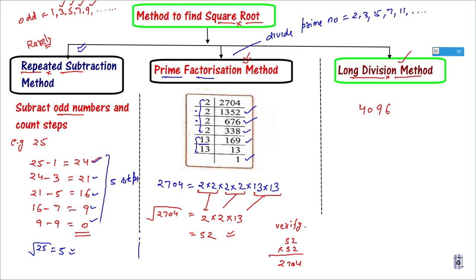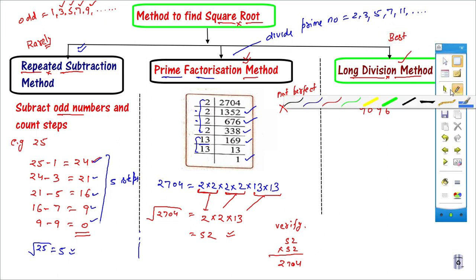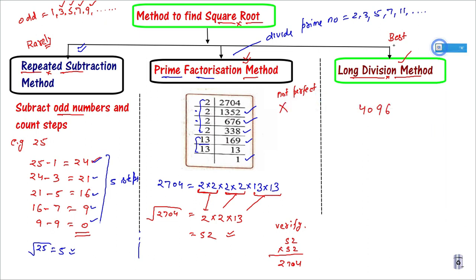Sir, is there any limitation here? Yes. If the number is not a perfect square, then in the prime factorization you won't get all numbers in pairs. This method will not work out for non-perfect squares. The method will fail if every factor doesn't pair up. So what is the best method? My favorite one — the long division method. If anyone in 8th, 9th, 10th, 11th, or 12th standard knows this method, they will never get stuck in maths.